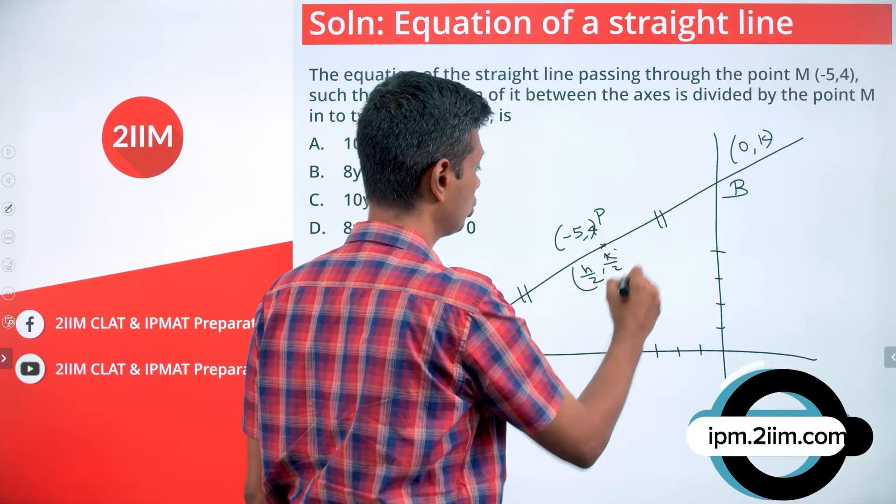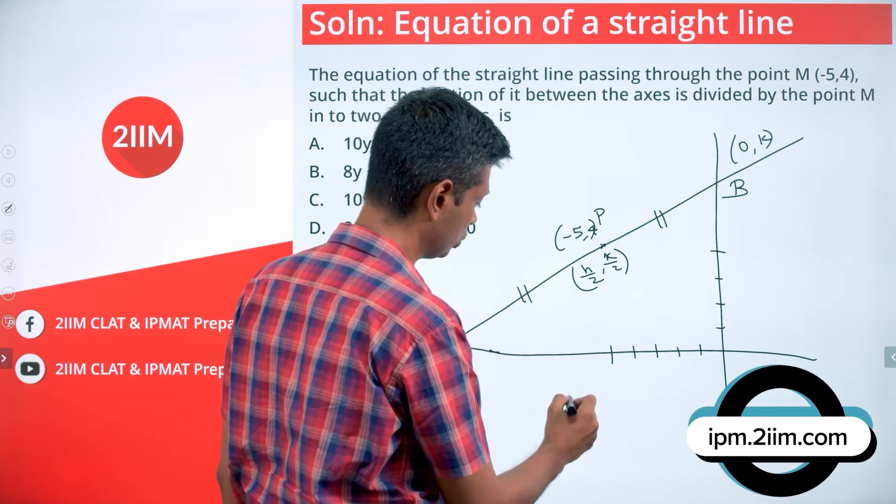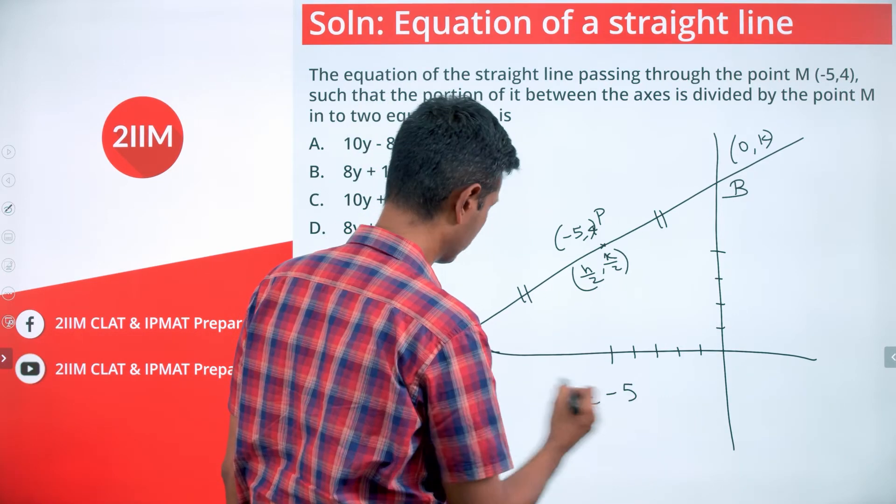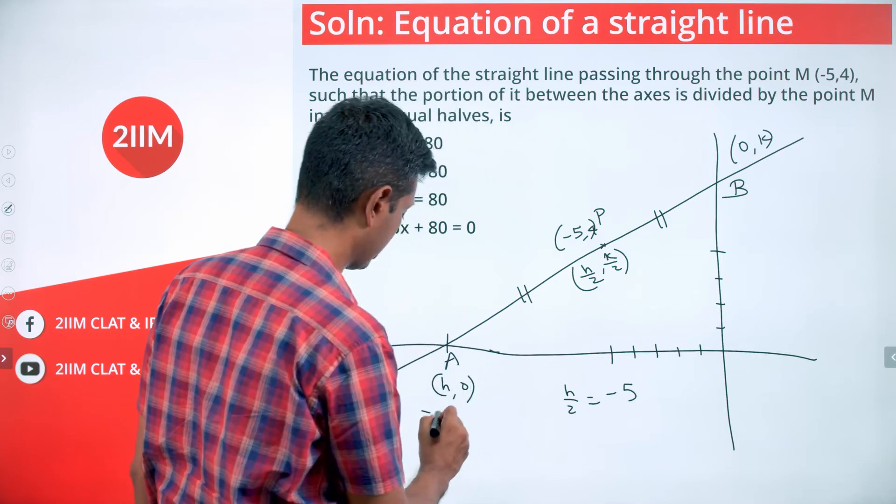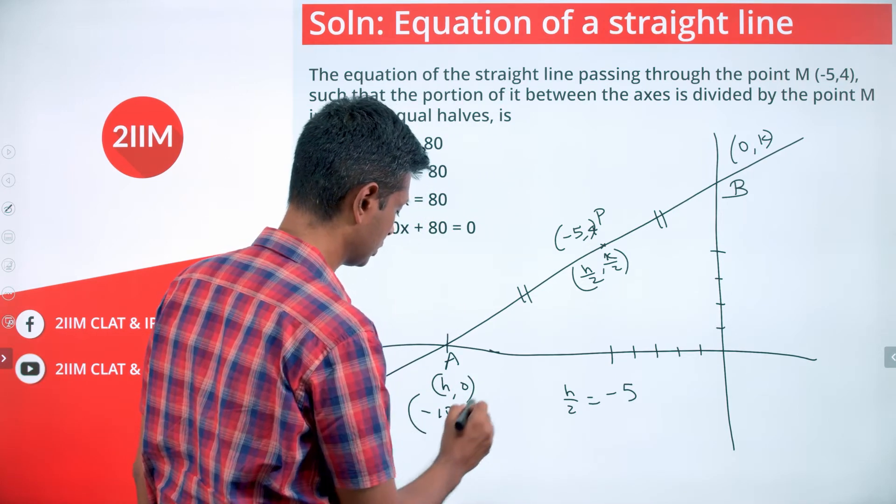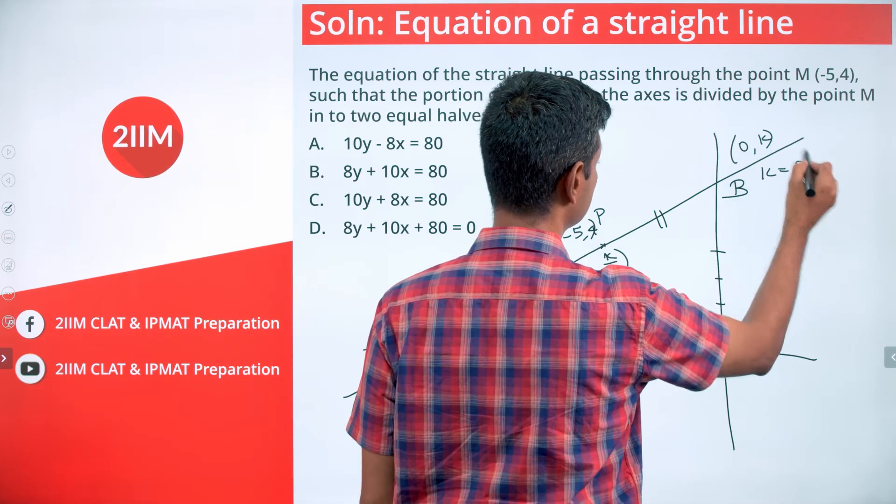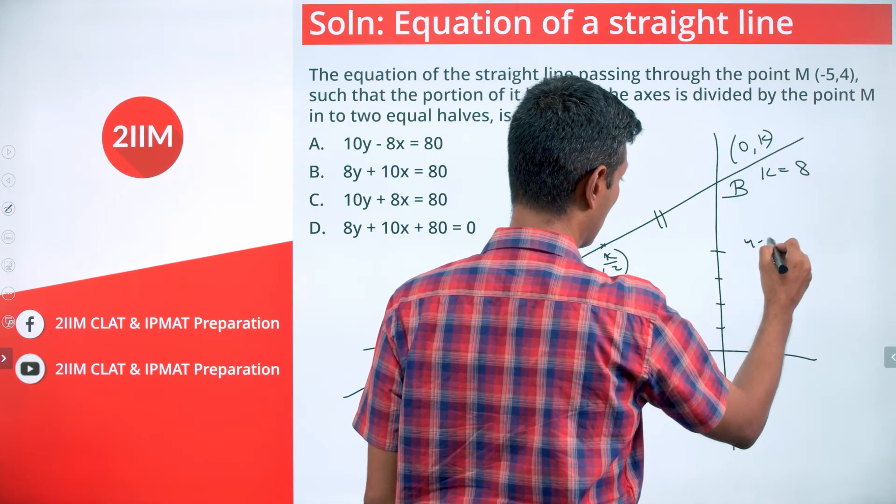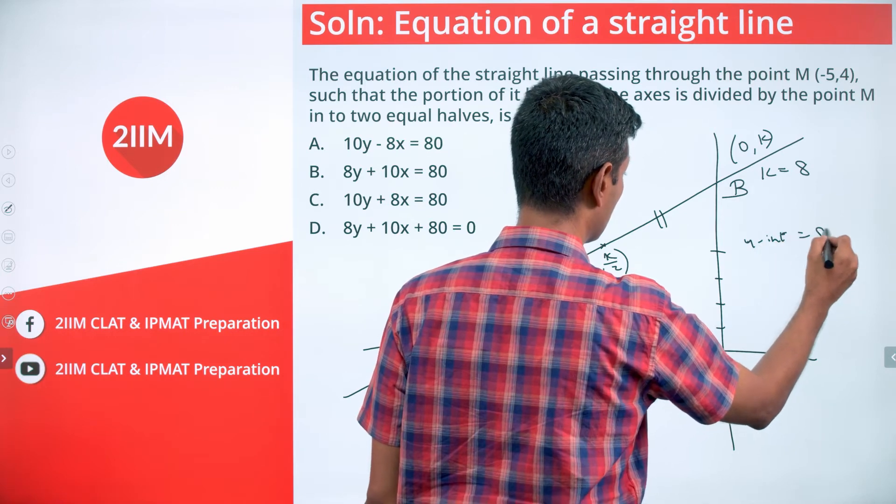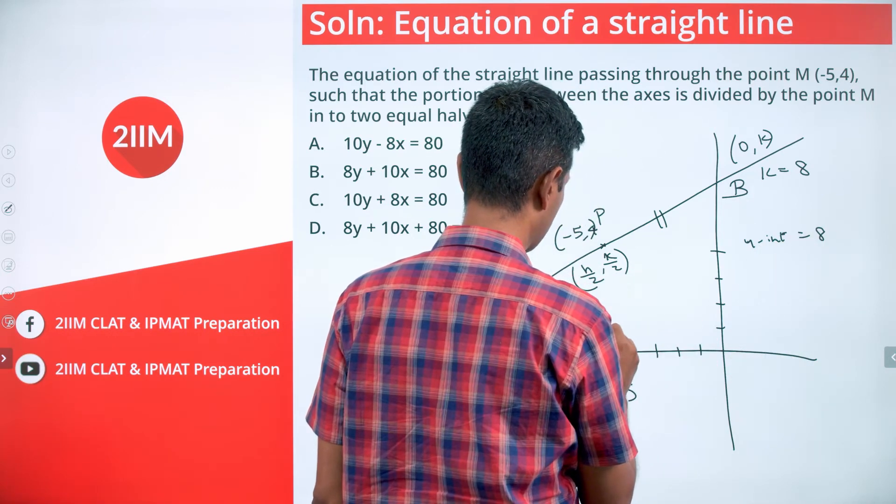This point should be (h+0)/2 = h/2, (0+k)/2 = k/2. So this h/2, k/2, or h/2 is -5, or h is -10. k/2 is 4, or k is 8.